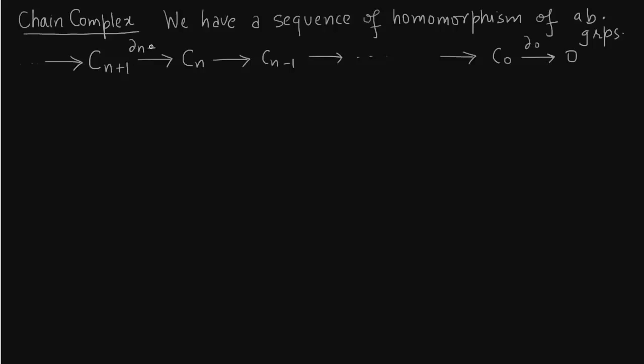And these maps, keeping with the boundary maps, we write as deltas. And I said that the composition of two successive homomorphisms is 0. And that is what I am writing here. Now this immediately implies that the image of delta_n+1 is contained in the kernel of delta_n.